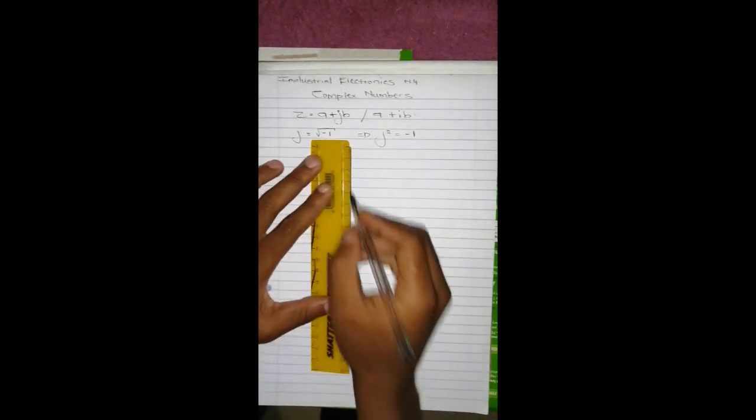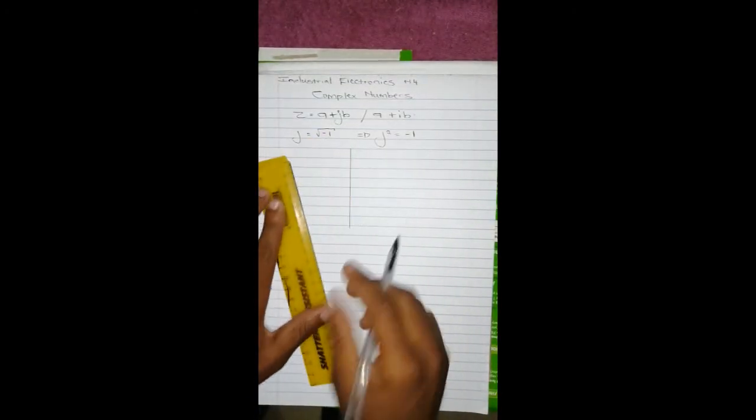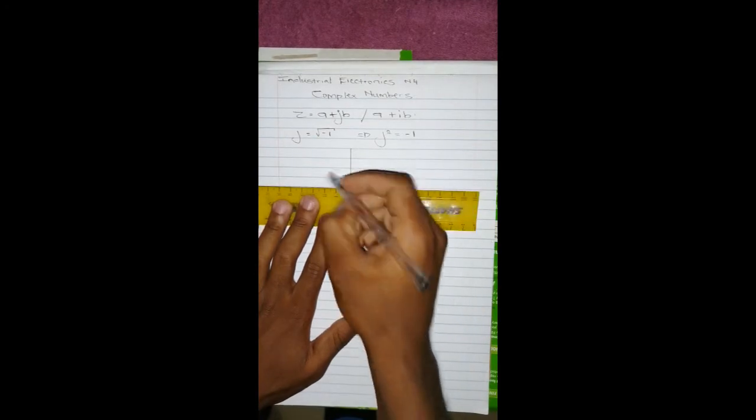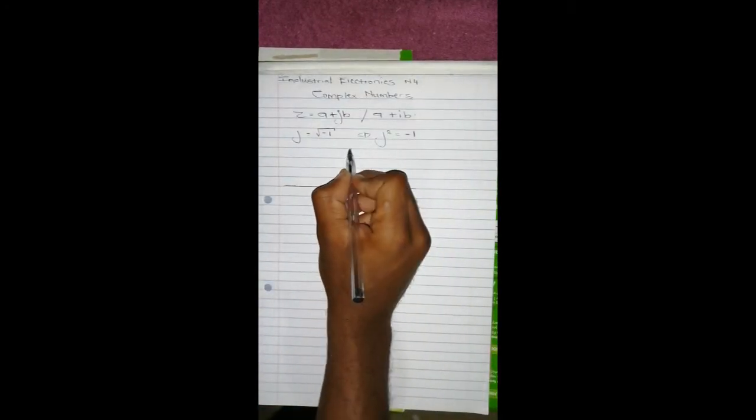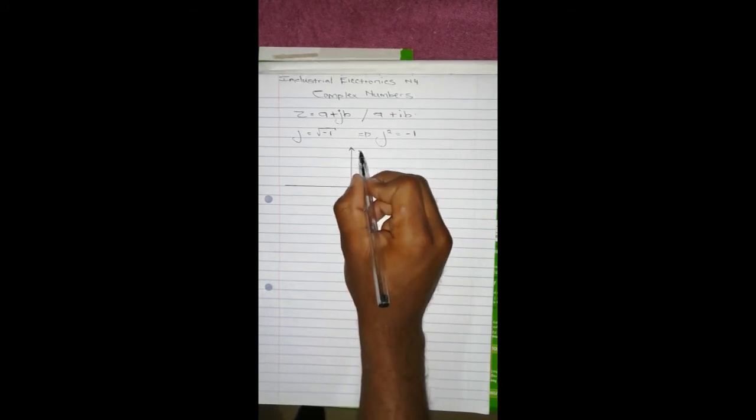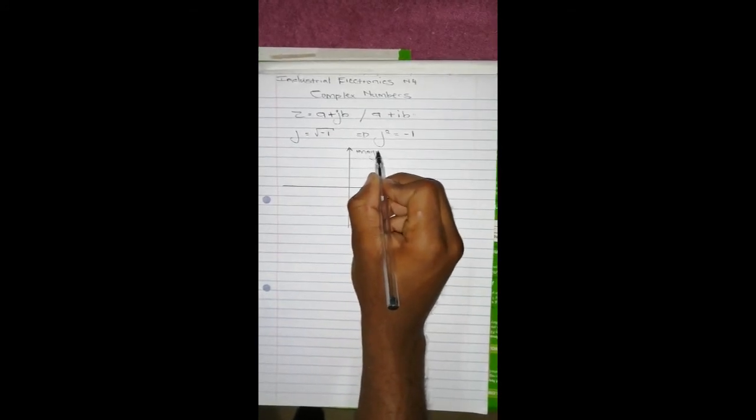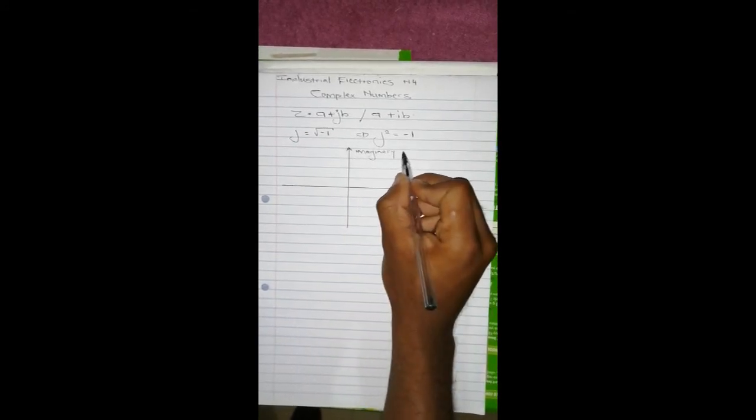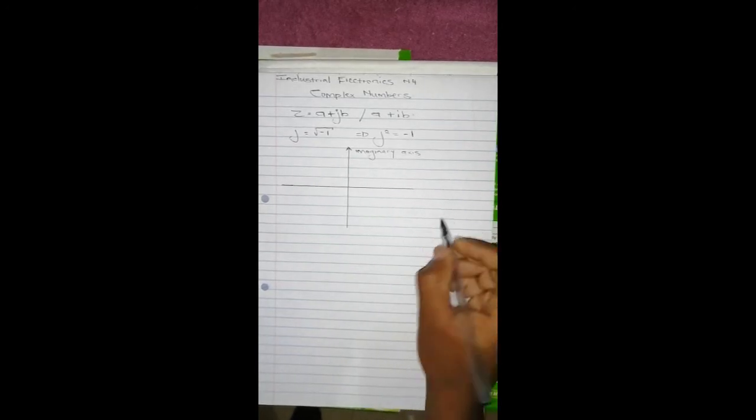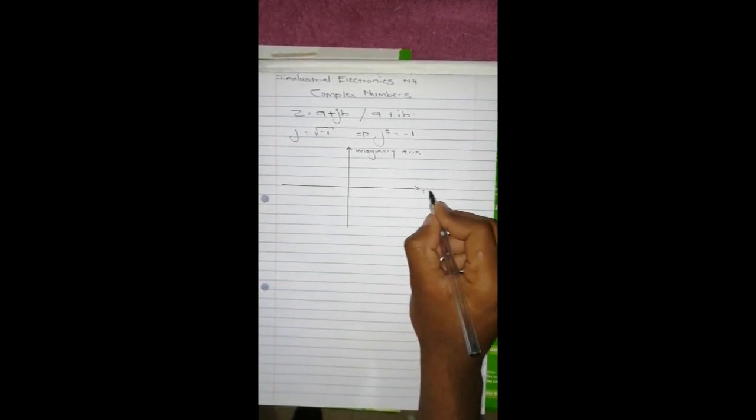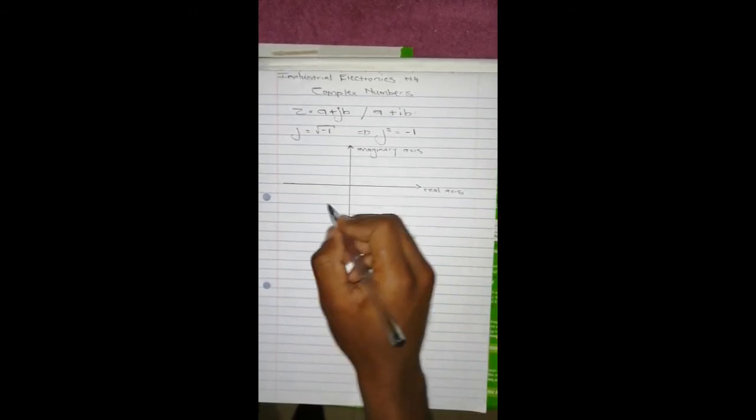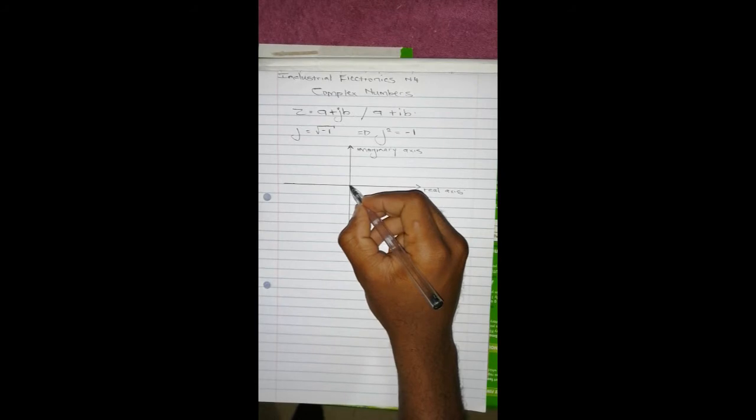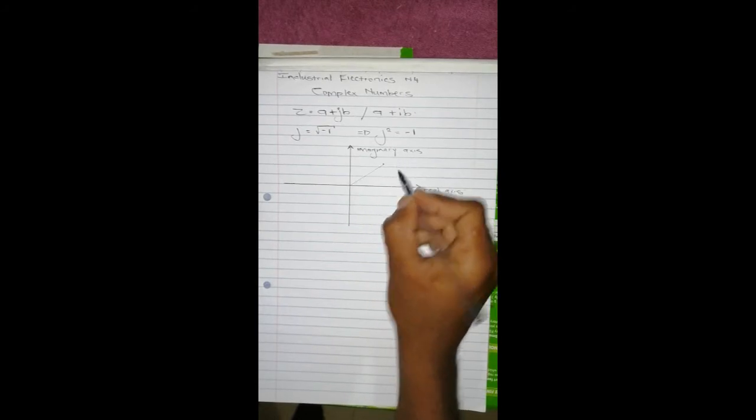And to do that, we have this Cartesian plane which normally will be y and x axis, but in this case the y axis becomes the imaginary axis and the x axis becomes the real axis.